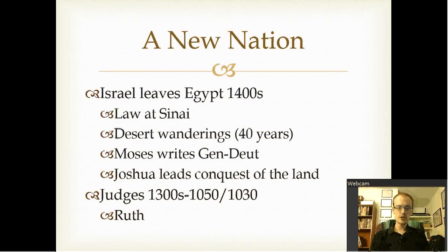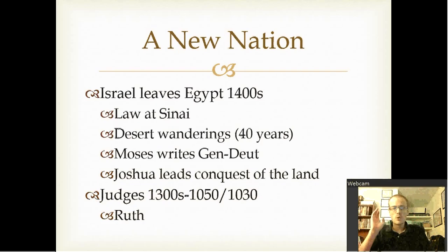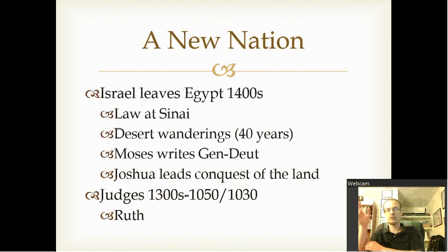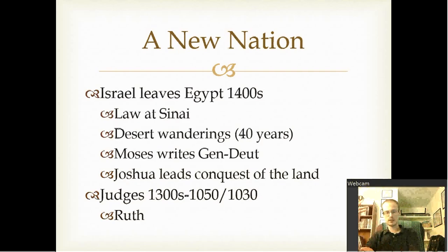Israel leaves Egypt sometime around either 1400 or 1200 BC — it really depends on how you understand this. They are given the law at Sinai, they wander in the desert for 40 years, Moses writes Genesis and Deuteronomy before he dies, and then Joshua leads the people into the conquest of the land, recorded in the book of Joshua. This takes us to the time of the judges, which is either between 1300 to 1030, or it could have been later.